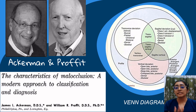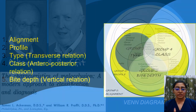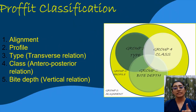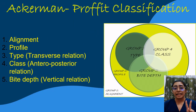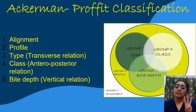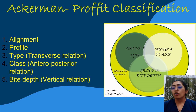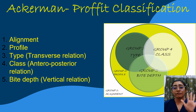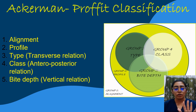The five characteristics and their order are as follows: first is the alignment of the arches; second is the facial profile; third is the transverse relationship, or the type; fourth is the sagittal relationship, also called the class; and fifth and final is the bite depth or the vertical relation.